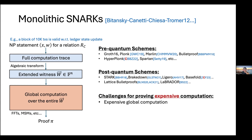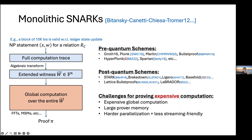When proving computationally expensive statements, the extended witness becomes super large because the computation trace can be very long, making this global computation really expensive. Moreover, the prover needs to take the entire witness as input, requiring large memory that can easily run out for large statements. Algorithms like FFTs are also not parallelization-friendly, making it harder for engineers to build streaming-friendly systems.